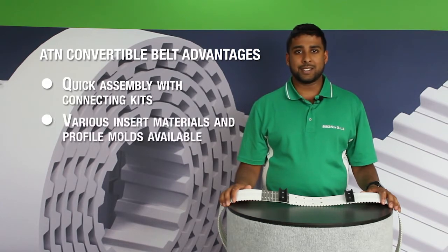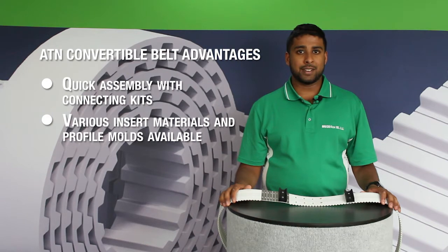Additionally, using our ATN inserts, which come in brass, nylon and stainless steel, you can easily screw down profiles up to 100mm wide on your belt.